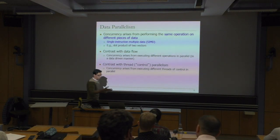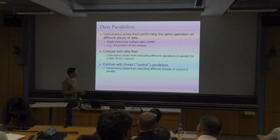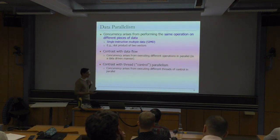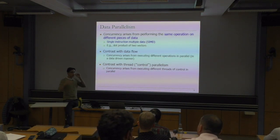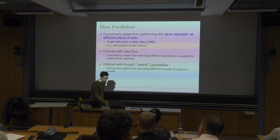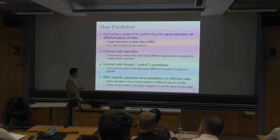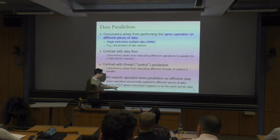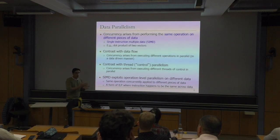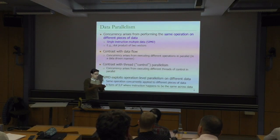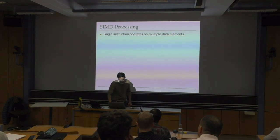In data parallelism, concurrency arises from the fact that we need to perform the same computation on multiple data elements. In data flow machines, concurrency arises from executing multiple different operations in parallel in a data-driven manner, because operations are only fired when data is ready. The contrast with thread or control parallelism - similar to programming with multiple threads like P-threads or OpenMP - is that in SIMD what we are doing is exploiting operation-level parallelism on multiple data. This can be seen as a form of instruction-level parallelism, but here the instructions are always the same ones applied on multiple data elements.